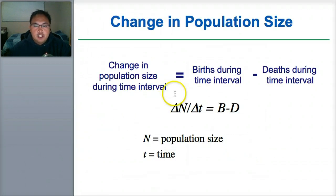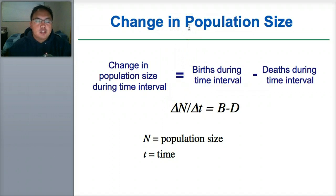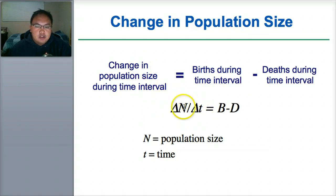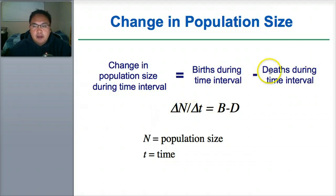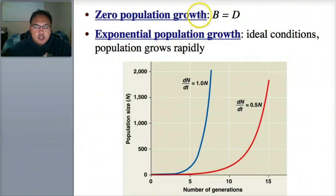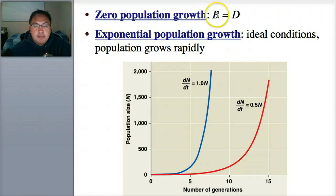Another formula you need to know is the change in population size formula. The change in population size over change in time equals births minus deaths — that's very simple. Zero population growth means the number of births is equal to the number of deaths. If the amount of people being born equals the amount dying, you have zero population growth.